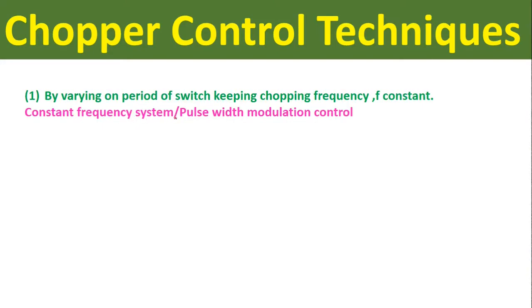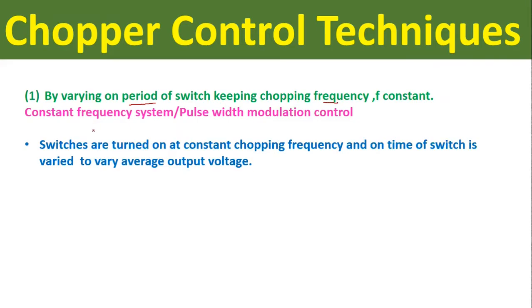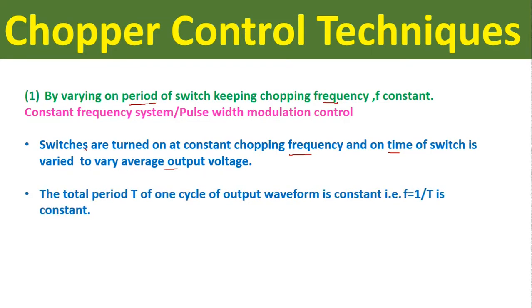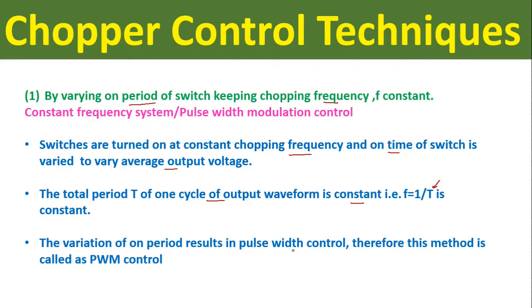First we will discuss the constant frequency system or pulse width modulation control, which is done by varying the on period of the switch keeping the chopping frequency f constant. In the constant frequency system, switches are turned on at constant frequency and the on time of the switch is varied to vary the average output voltage. The total time period T of one cycle of the output waveform is constant because frequency equals one upon time period, so to keep frequency constant we must keep T constant.